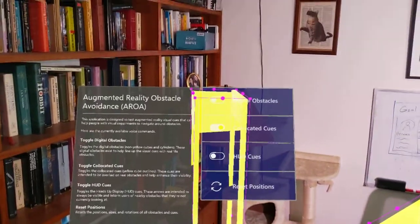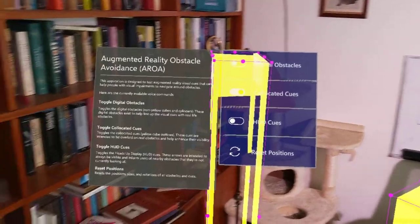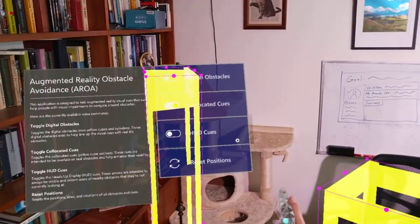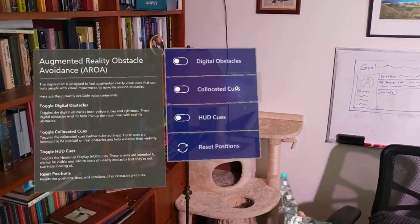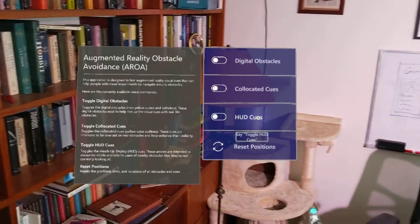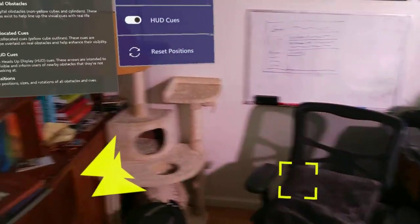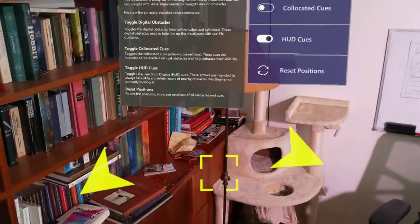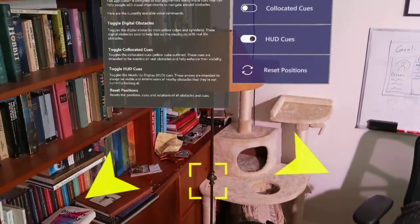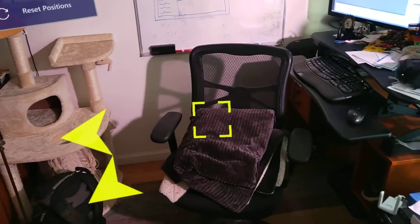In addition to the co-located cues, we have HUD cues or heads-up display cues. The idea is it doesn't matter where you're looking; these arrows will help guide you to know where obstacles are. Here you can see I have one for the lamp, one for the chair, one for the water bottle.